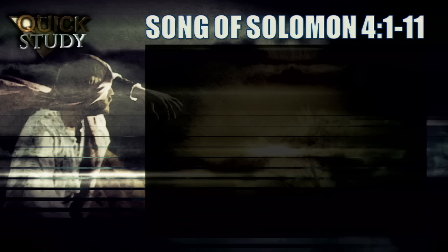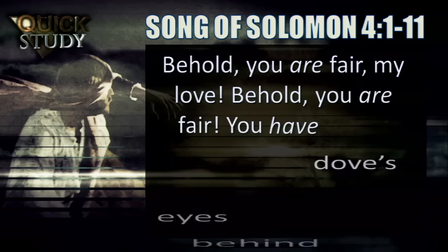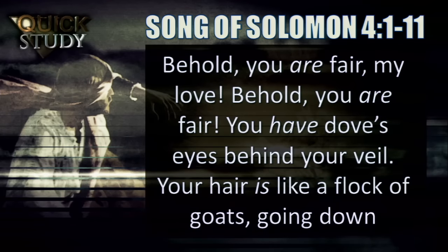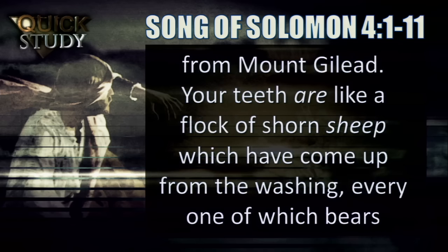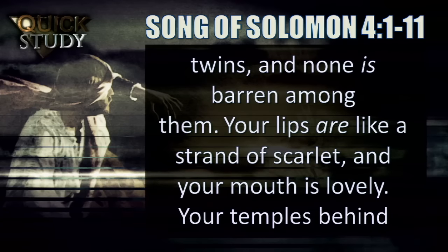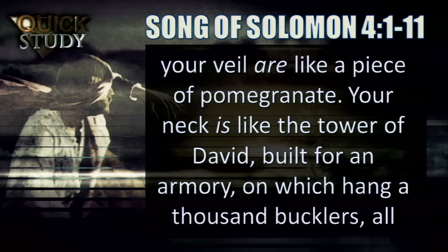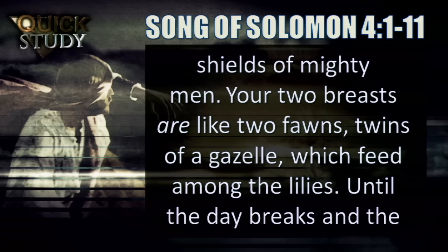Song of Solomon 4, verses 1 through 11: 'Behold, you are fair, my love; you have dove's eyes behind your veil. Your hair is like a flock of goats going down from Mount Gilead. Your teeth are like a flock of shorn sheep which have come up from the washing, every one of which bears twins, and none is barren among them. Your lips are like a strand of scarlet, and your mouth is lovely. Your temples behind your veil are like a piece of pomegranate. Your neck is like the Tower of David, built for an armory on which hang a thousand bucklers, all shields of mighty men. Your two breasts are like two fawns, twins of a gazelle, which feed among the lilies.'